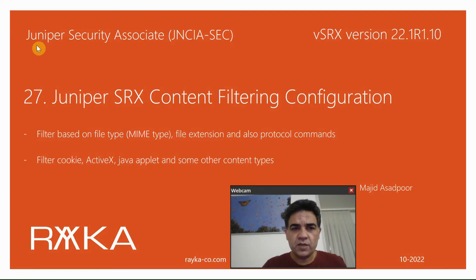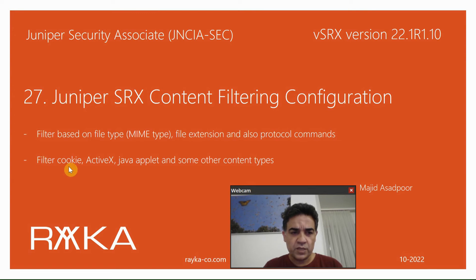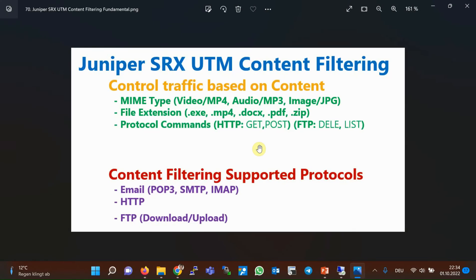Welcome to another video of the Juniper Security Associate course. In this section I will talk about Juniper SRX content filtering concepts and configuration. With content filtering it is possible to filter traffic based on MIME type, file extension, and protocol commands. It is also possible to filter cookies, ActiveX, Java uploads, and other content types that can be vulnerable. Content filtering can inspect web, FTP, and email traffic. MIME type, file extension, and protocol commands are the main content types we can inspect and control.